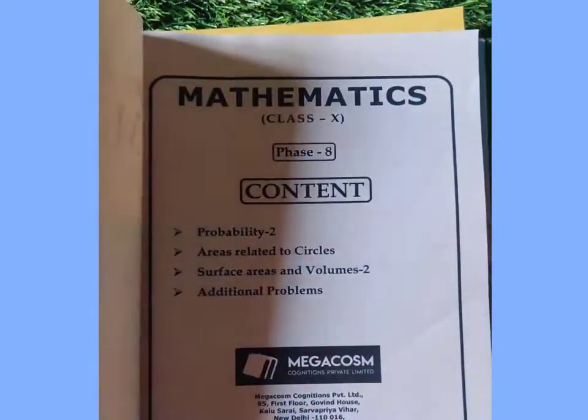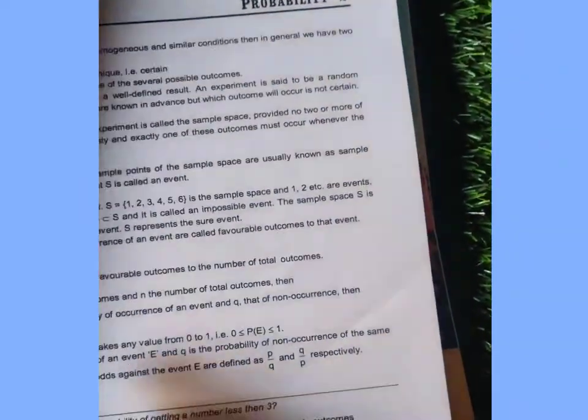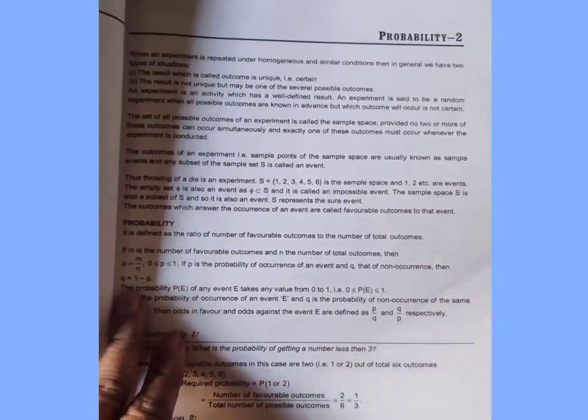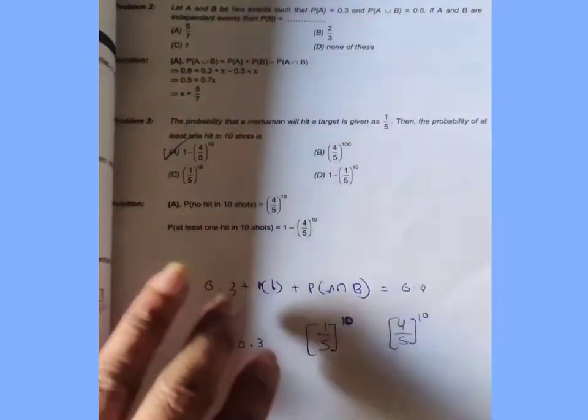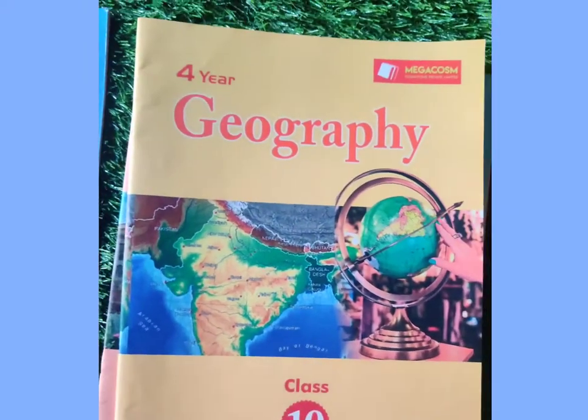Now this is the Mathematics Phase 8 book. In Mathematics, Probability 2, Area Related to Circle, Surface Area and Volume 2, and Additional Problems are covered. Similarly here also first the theoretical part is given with exercises, then solved problems — you can see these are the solved problems — and then the unsolved problems. Answers are given after every topic.